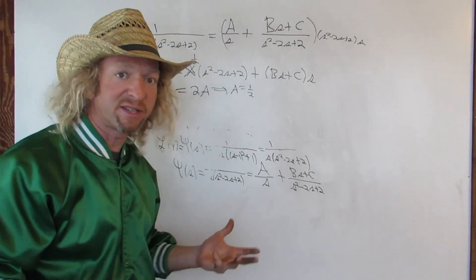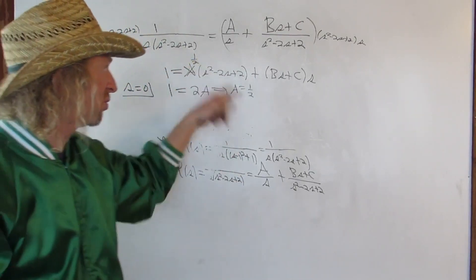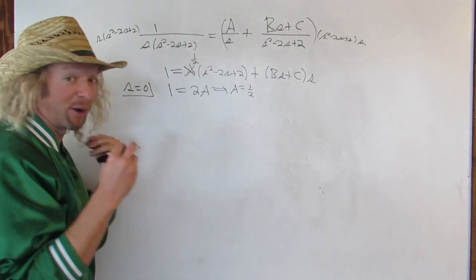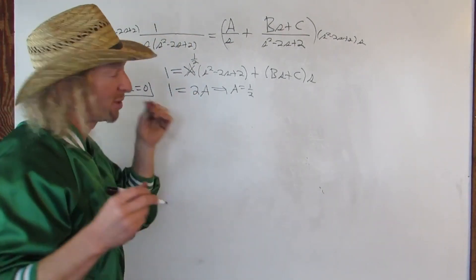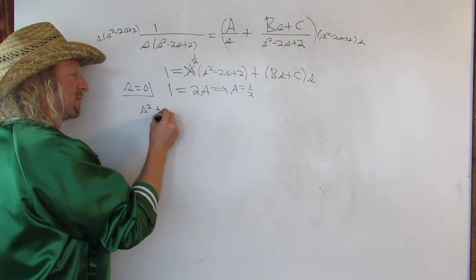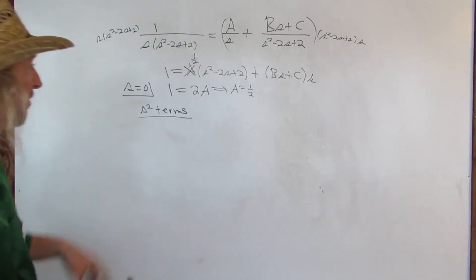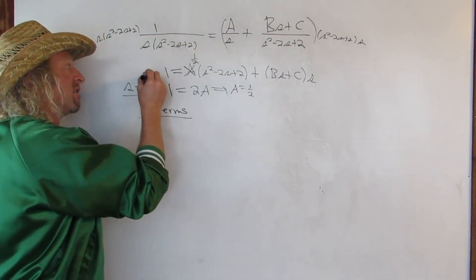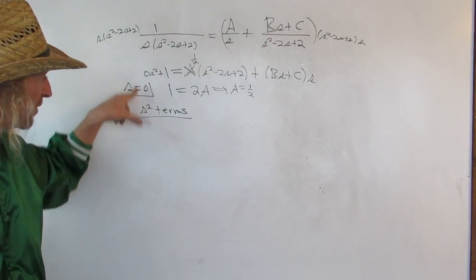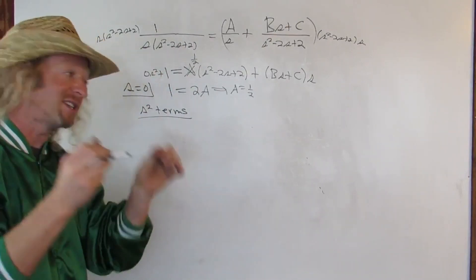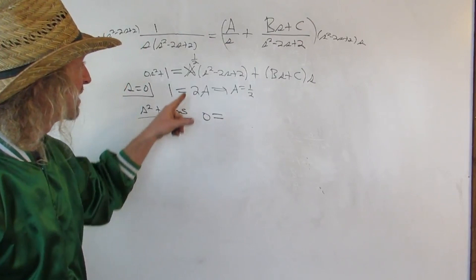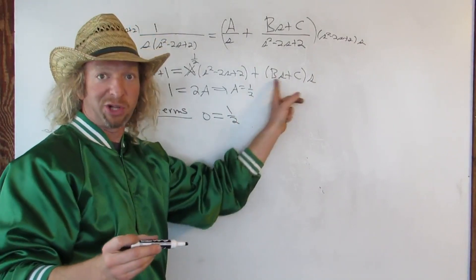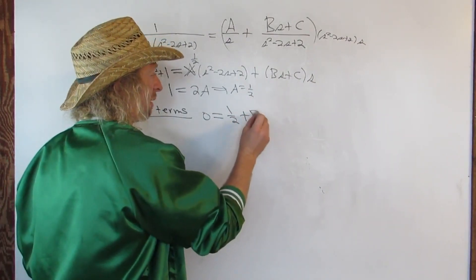There's nothing else you can plug in to immediately find b and c. So you resort to equating coefficients — we start with the highest degree terms, the s squared terms. On the left-hand side the coefficient of s squared is zero. On the right-hand side, from A times s squared that's one half, and from Bs times s that's b. So one half plus b equals zero, therefore b equals negative one half.